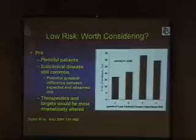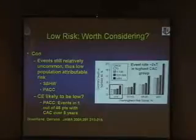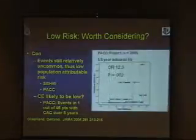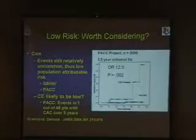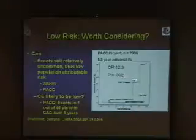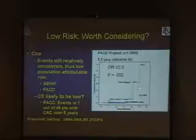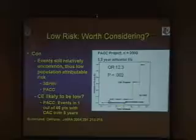Certainly their therapeutics and targets would be most dramatically altered in low-risk people. On the con side, events are still relatively uncommon — even Bob DiTrona's data show events are less common in the lower-risk group. In the PAC project, with up to six-year actuarial follow-up in 2,000 individuals, we have an odds ratio of 12 for incident coronary heart disease events if any coronary calcium is present, at a mean age of 42, controlling for the Framingham risk score. But this is an aggregate of only 10 total events after six years — statistically significant, but events are very uncommon.